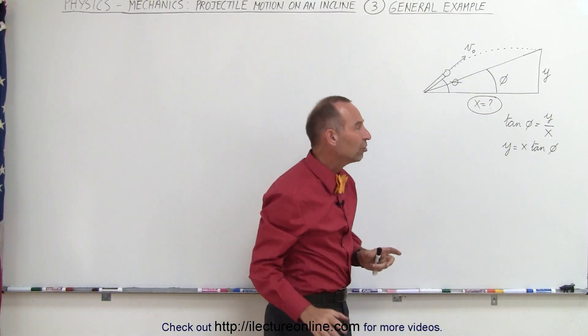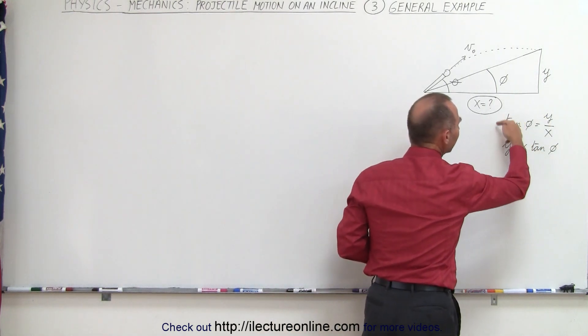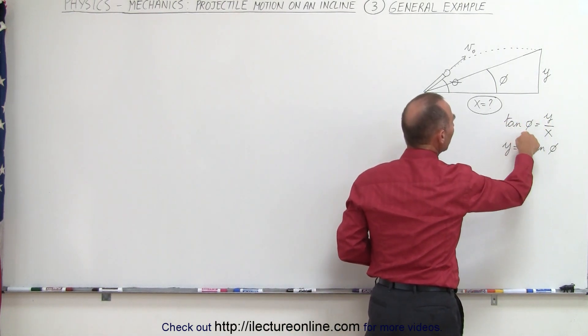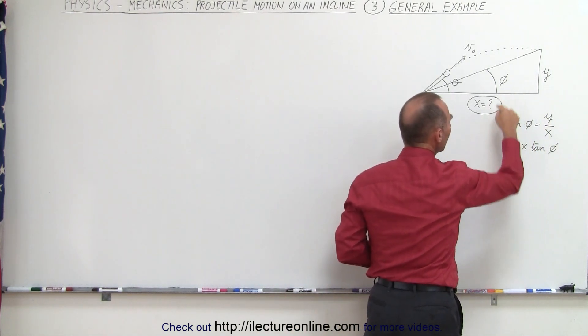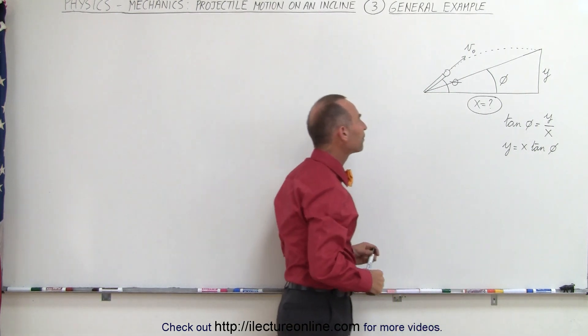The relationship between x and y can be found by taking the tangent of phi, giving us y equals x times the tangent of phi.